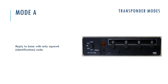Transponders can work in different modes depending on the model. Early models can work only in basic Mode A, which replies to the base with only the squawk code that you set on the front face of the transponder. This is the simplest mode of the transponder.